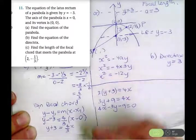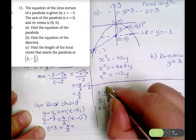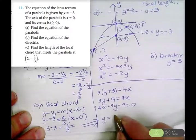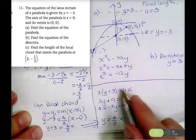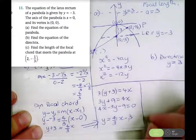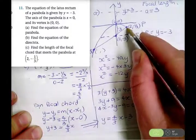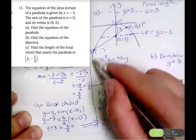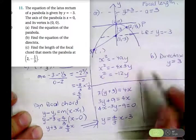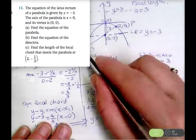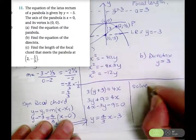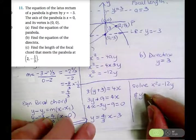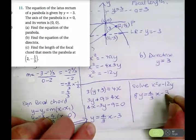I'll put it in y equals mx plus b form to solve simultaneously. I want to solve x squared equals negative 12y with y equals 4 over 3 x minus 3 simultaneously. This will give me both points of intersection. I already know one solution is x equals 2, but I need to find the x value for point Q.